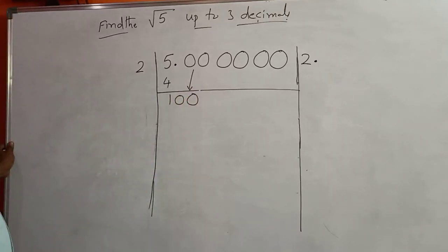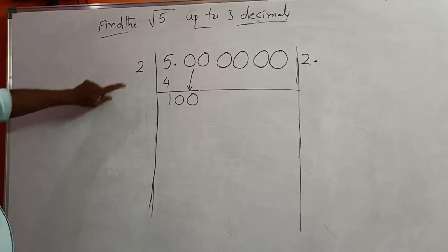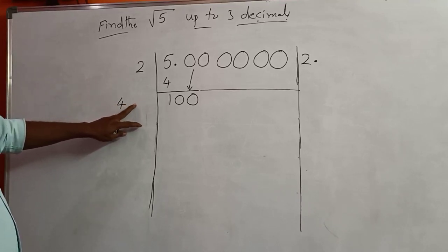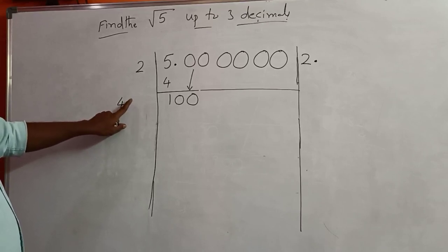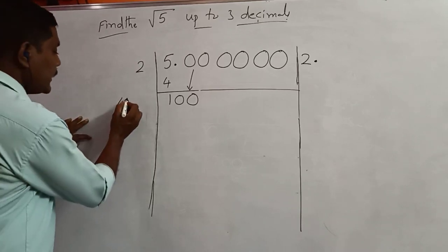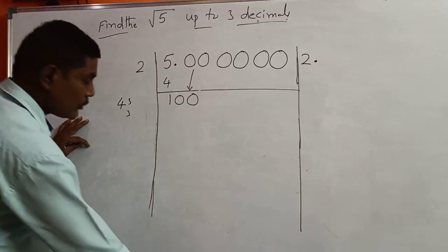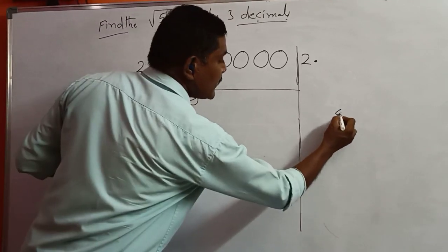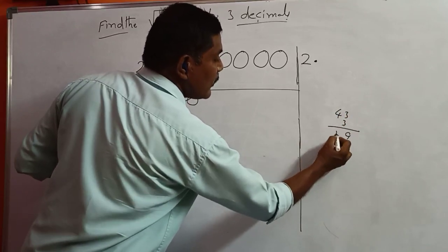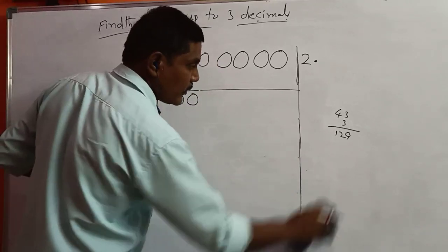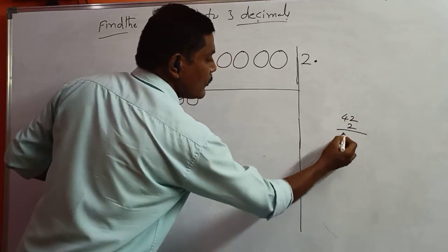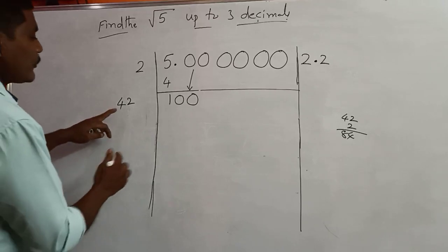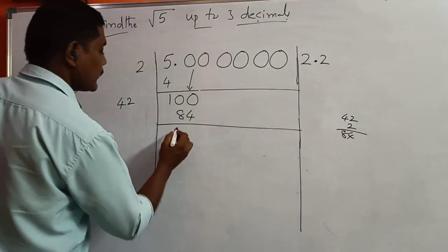Double this number: 2 plus 2 equals 4. Now the question is what number to write here. If you write 2: multiply 2 by 42. If you write 3: multiply 3 by 43. By practice, 43×3=129, greater than 100, not possible. So 42×2=84. We write 2 here, the same number on the right. 2×42=84. Subtracting: 100 minus 84 gives 16.